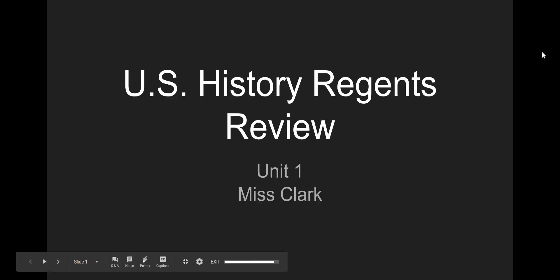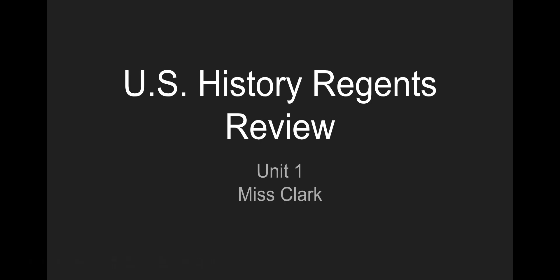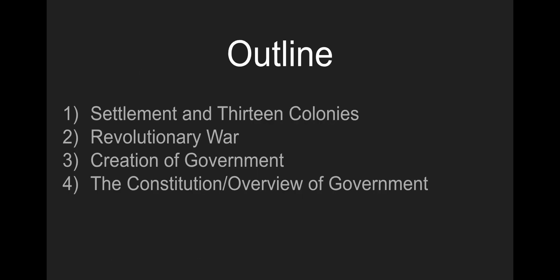Welcome to U.S. History Regents Review. This is Unit 1. We're going to be doing several videos to review this unit. It's a rather large unit. It includes settlement in the 13 colonies, the Revolutionary War, the creation of government, and the big one — the Constitution — with an overview of government in general. Because remember, this is the United States History and Government Exam.